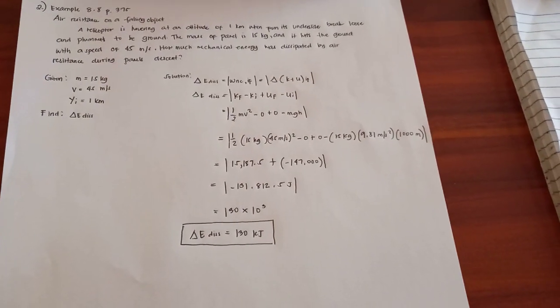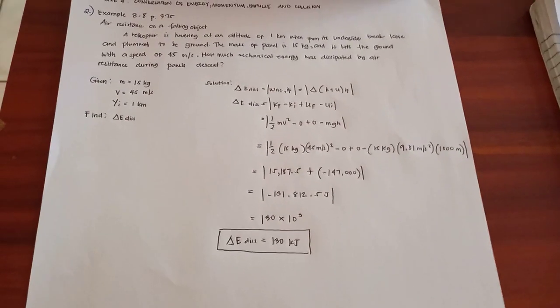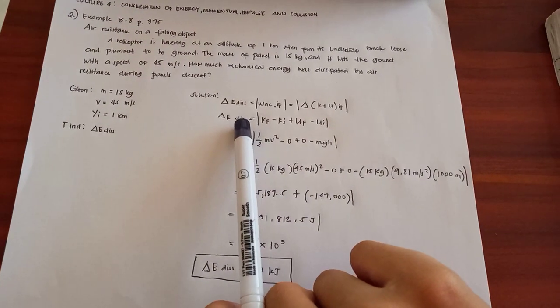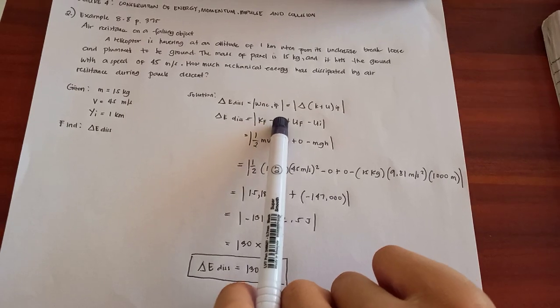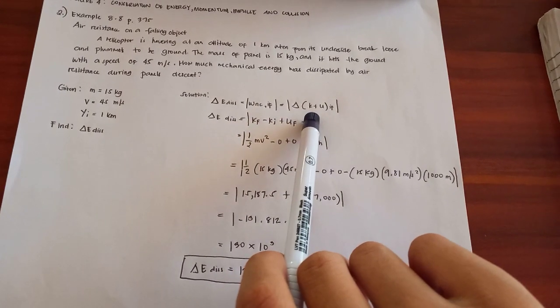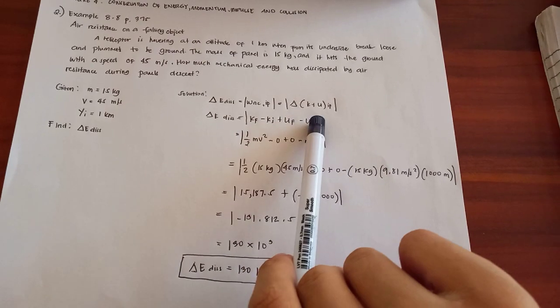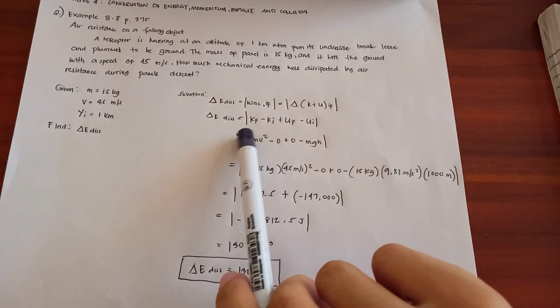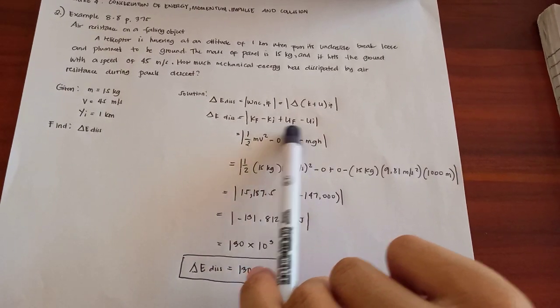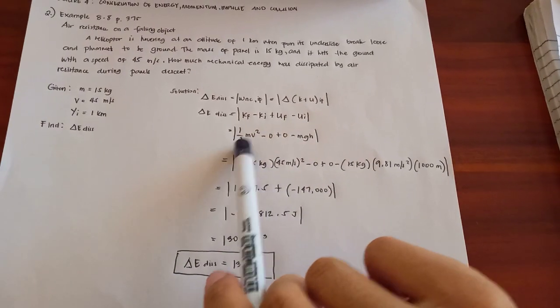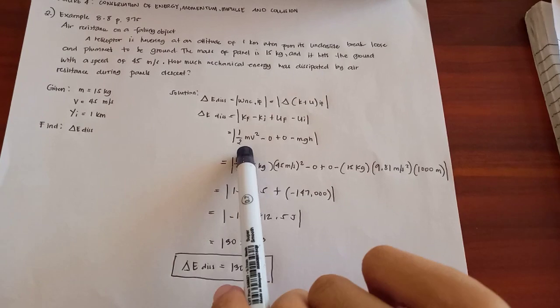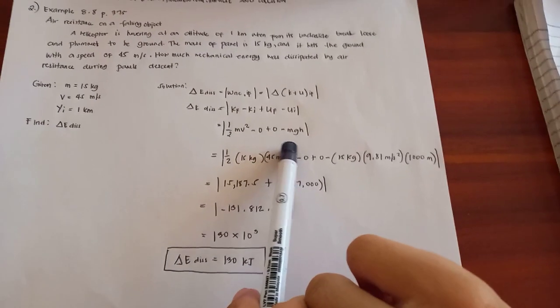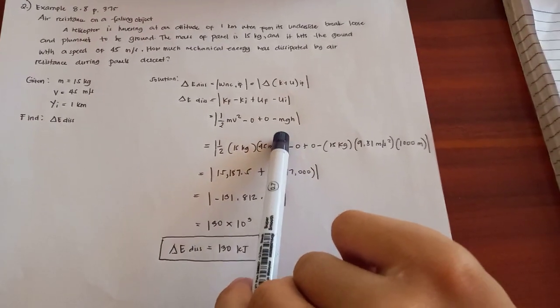Mass is 15 kg, velocity is 45 meters per second, and Yi is equal to 1 km. Find the energy dissipated. Solution: Energy dissipated is the absolute value of non-conservative work equals the absolute value of change in kinetic energy. Energy dissipated equals Kf minus Ki plus Uf minus Ui. So Kf is one-half mv squared minus Ki is 0, plus Uf is 0 minus Ui is Mgh.